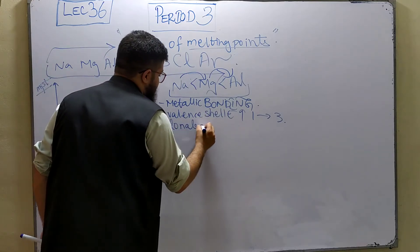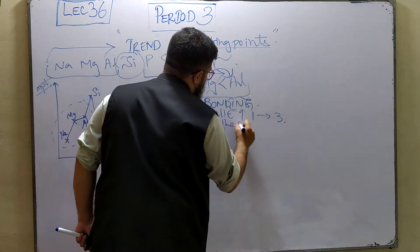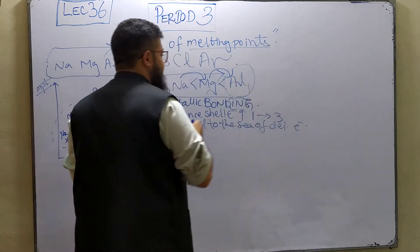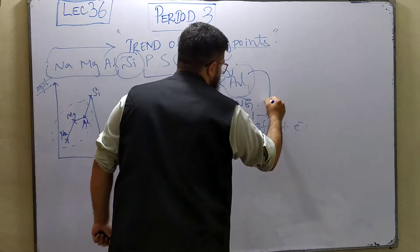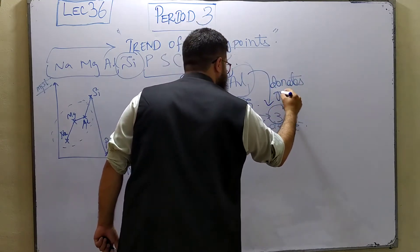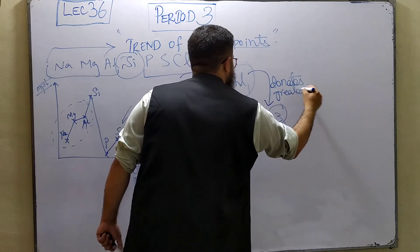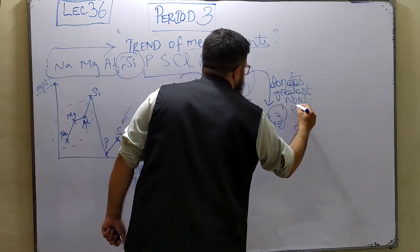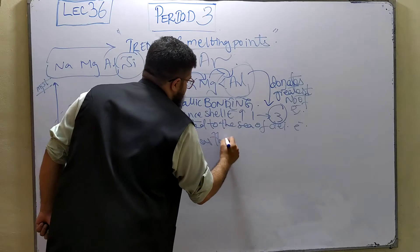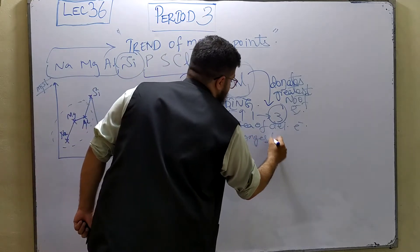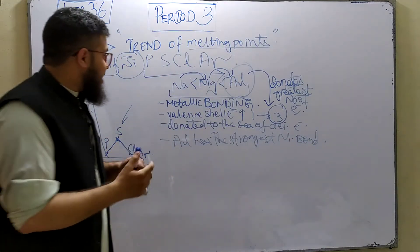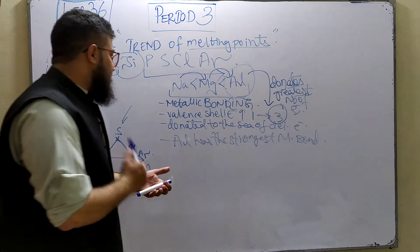The valence shell electrons are donated to the sea of delocalized electrons. Since aluminum donates the greatest number of electrons to the sea of delocalized electrons, aluminum has the strongest metallic bonds. Therefore, the greatest energy is needed to overcome the metallic bonds present in aluminum.